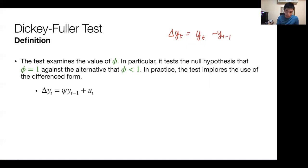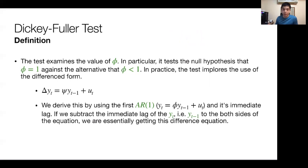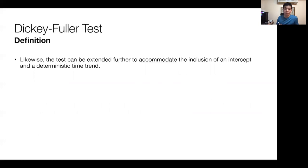We derive this by using the first AR model and its immediate lag. If you subtract the immediate lag of YT, i.e. YT minus 1, from both sides of the equation, we're essentially getting this simple difference equation. This difference equation can be derived quite simply. In this case, we test this coefficient here, which is phi minus 1.